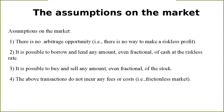The second market assumption is that it is possible to borrow and lend any amount, even fractional amounts of cash, at the risk-free rate. But in real life, this statement is not always true. Similarly, it is assumed possible to buy and sell any amount, even fractional amounts of stock, which is also not always true in practice.